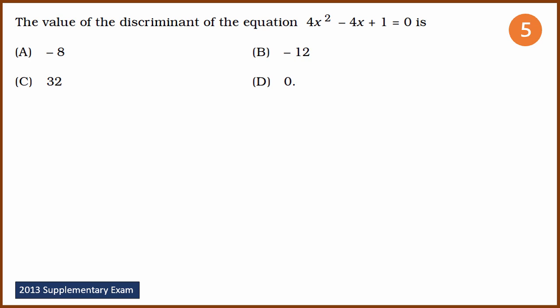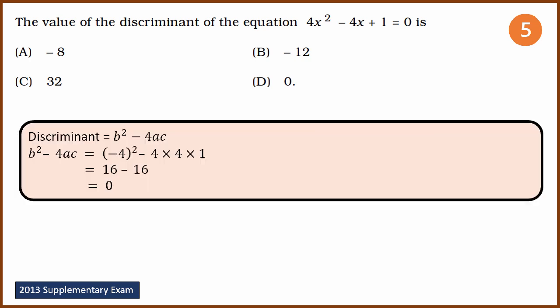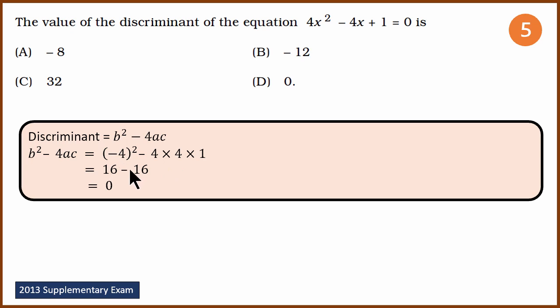They can also ask for the value of a discriminant. To find it, we identify a, b, and c, then substitute into b squared minus 4ac. Here, a equals 4, b equals minus 4, and c equals 1. So b squared is minus 4 squared equals 16, and 4ac is 4 multiplied by 4 multiplied by 1 equals 16. Therefore, 16 minus 16 equals 0. The answer is D.